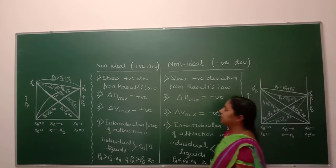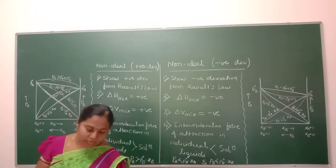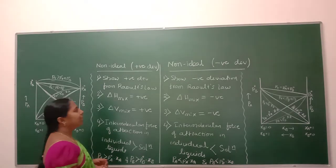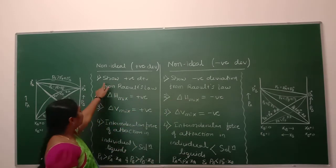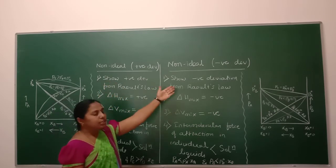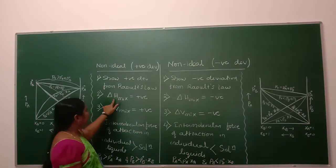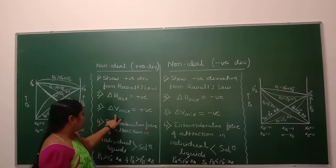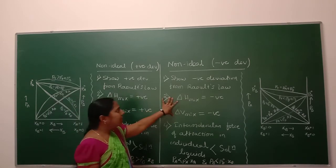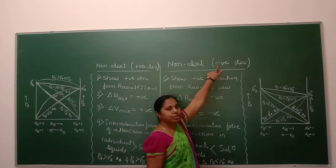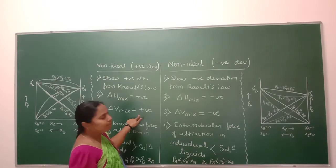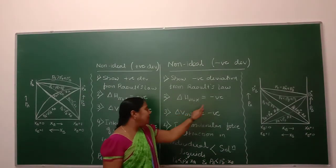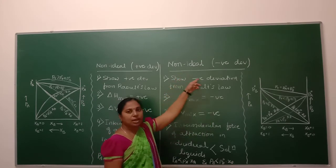These kinds of curves are obtained for non-ideal solutions with positive and negative deviation. To differentiate once again: in case of non-ideal solution with positive deviation, it shows positive deviation from Raoult's law, delta H of mixing is positive and delta V of mixing is also positive. In case of non-ideal solution with negative deviation, delta H of mixing is negative and delta V of mixing is also negative.